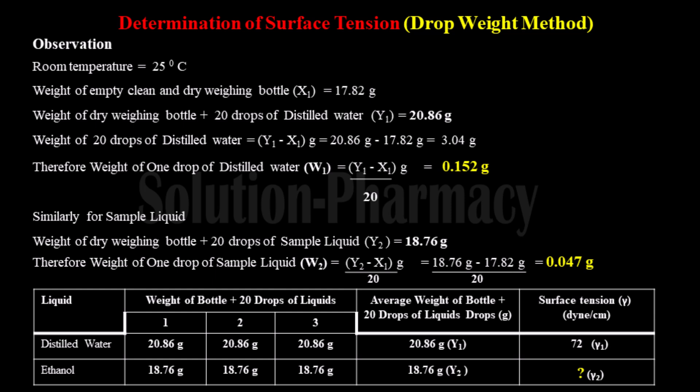The room temperature recorded is 25°C. The weight of the empty bottle, denoted by x1, is 17.82 grams. The weight of 20 drops of distilled water with the weighing bottle, denoted by y1, is 20.86 grams.